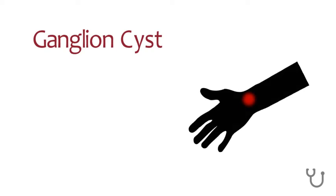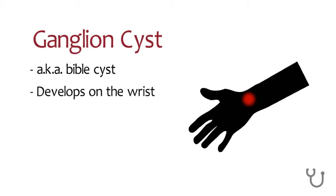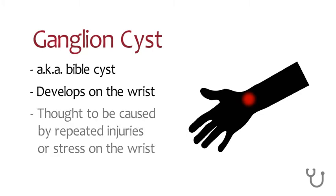A ganglion cyst, also known as a volar cyst, is a type of cyst that usually develops on the wrist, but can also develop on the knee and foot. This cyst is thought to be caused by repeated injuries or stress on the wrist.